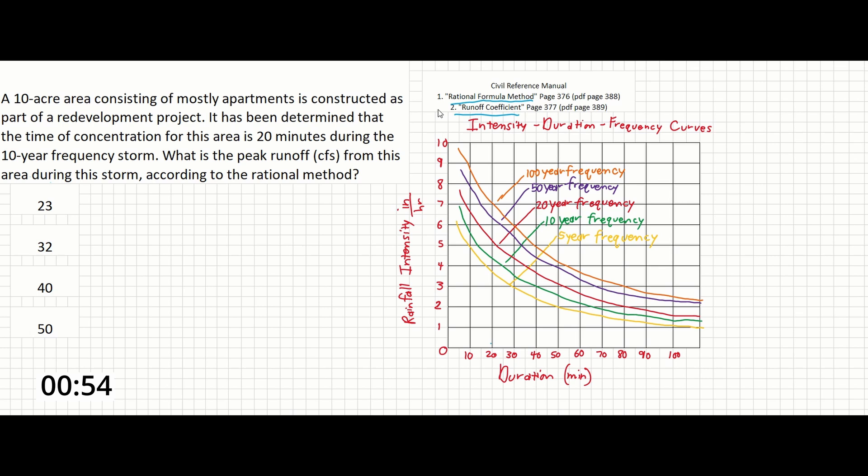Anyway, the reference manual will take us to the equation for the rational method, and we can write that here. Rational method. And the equation is going to be Q equals C I A. Q is our flow in units of CFS, C is unitless, I is in inches per hour, and A is in acres.